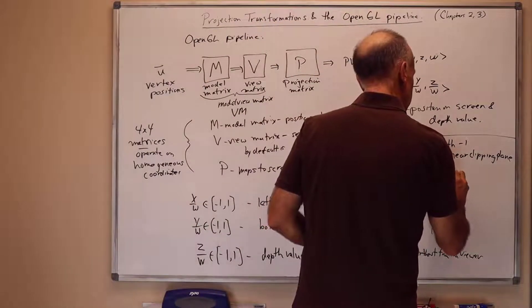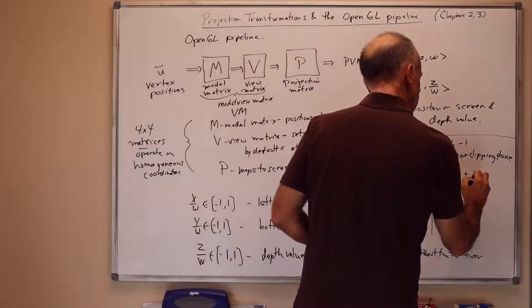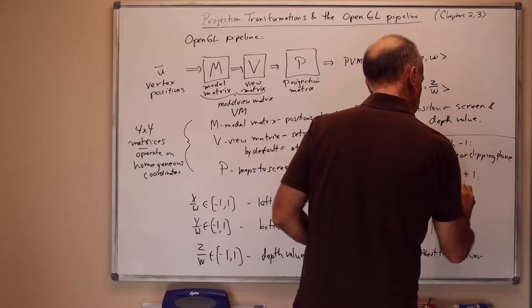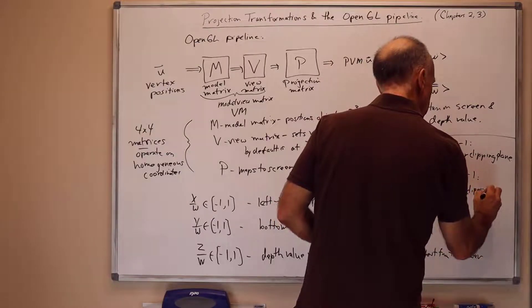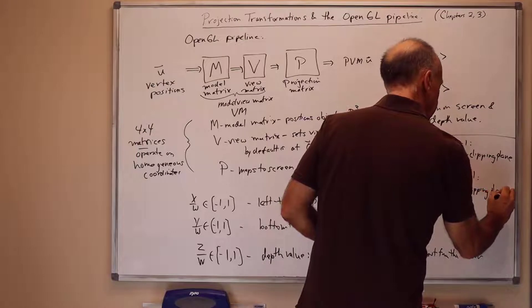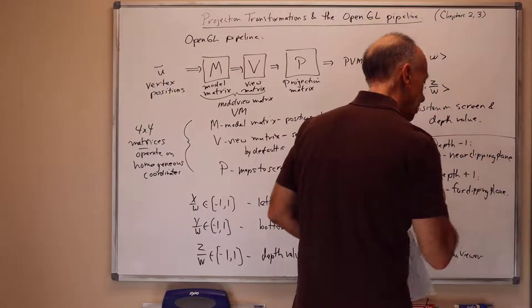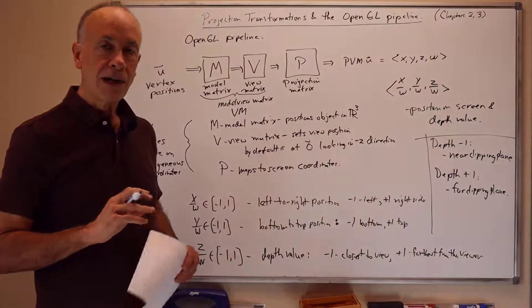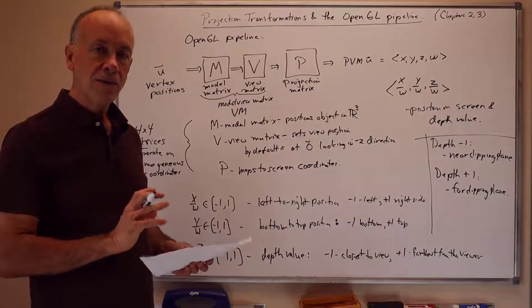The near clipping plane is the plane that holds the closest objects that can be seen. Depth of plus 1, this gives us the so-called far clipping plane. And anything that's further away than the far clipping plane is not visible in the scene. The triangles are just discarded if they're too far away.